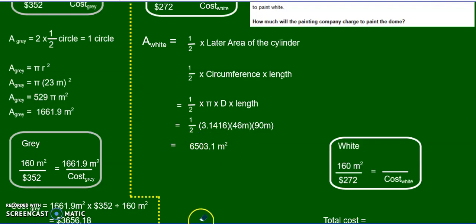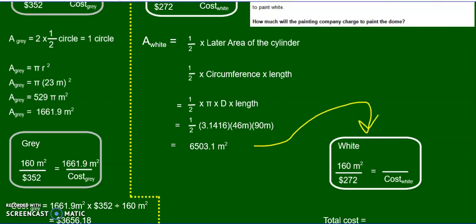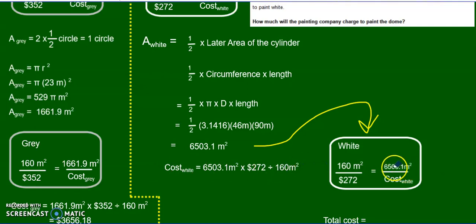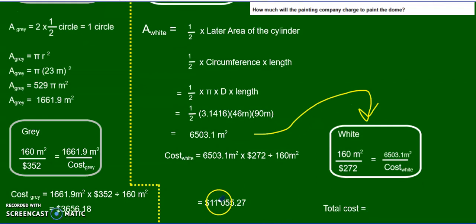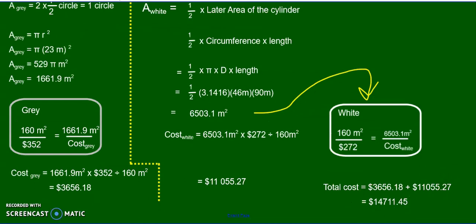Now I know the area of the white, so I can use my proportion. I put in 6,503, cross multiply — 6,503 times 272 divided by 160 — and that gives me about $11,000 for the white, plus $3,600 for the grey. Add them all together, and this is your final total cost.